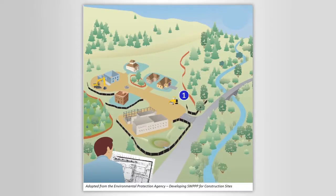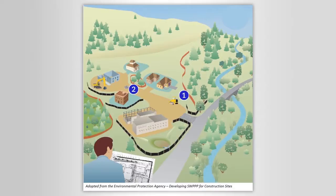Another key location is at the stockpile of materials. Whether loose material is being stored for future use or just being dug out from excavation operations, the loose soil and the steep banks of the stockpiles make these locations susceptible to wind and water erosion.